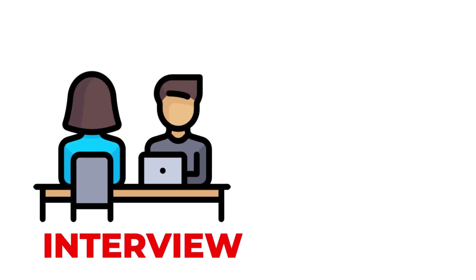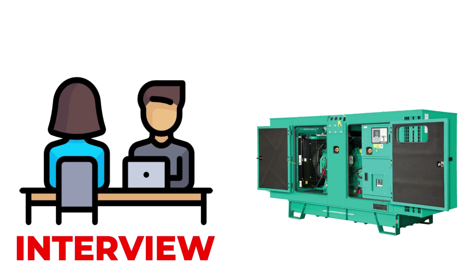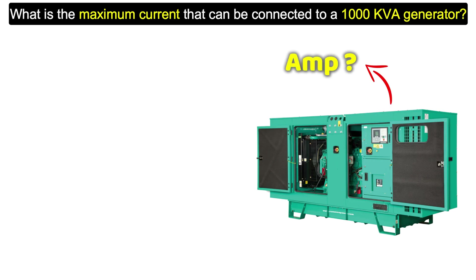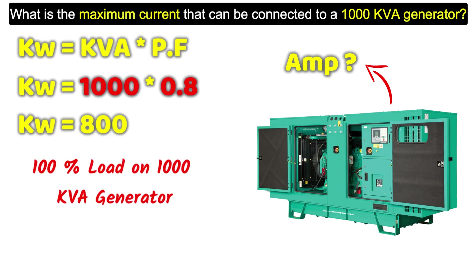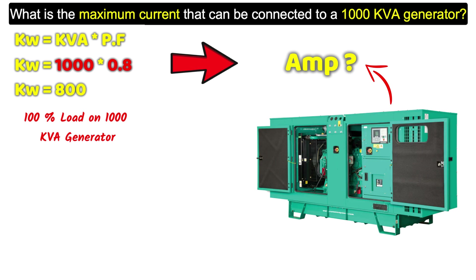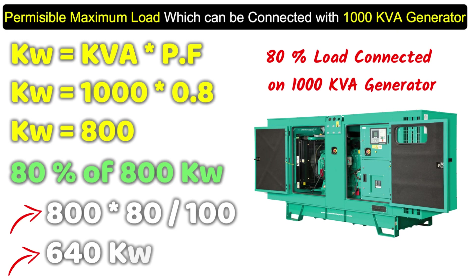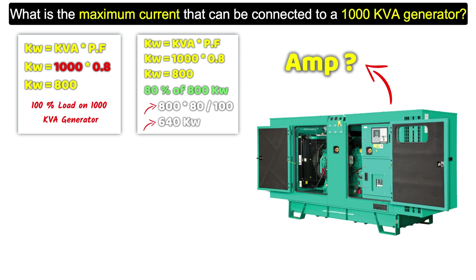In an interview, you may also be asked: how much ampere load can you connect to a 1000 kVA generator? To find the ampere rating of any generator, first find the kilowatt, then convert it to ampere. According to our calculation, 100% load is 800 kW and 80% load is 640 kW. Depending on which ampere value you need to find, you do the calculation accordingly.